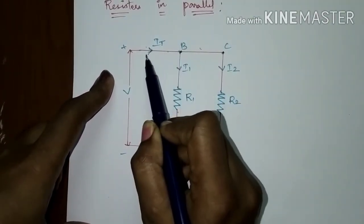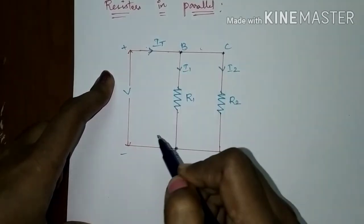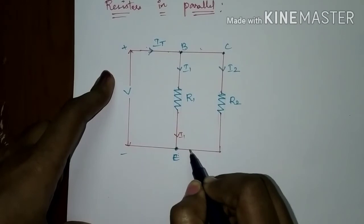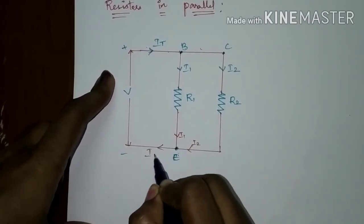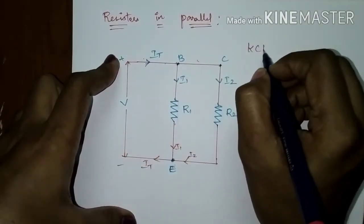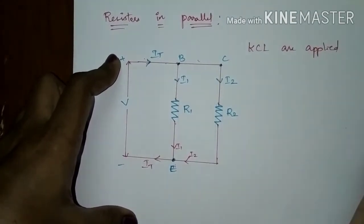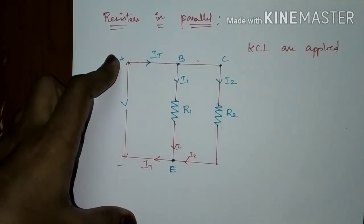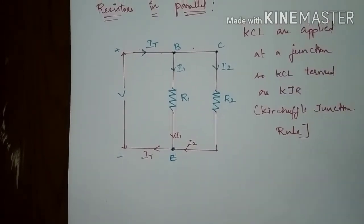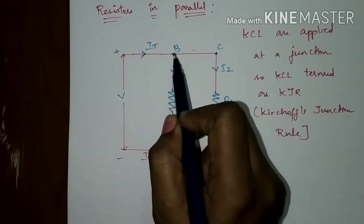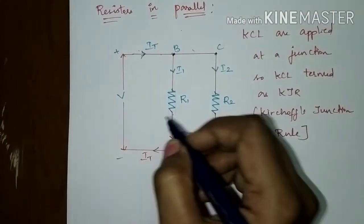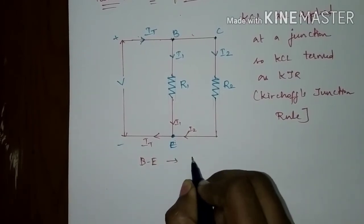Node B is where the current enters and splits into I1 and I2. In the case of node E, it is a leaving node where I1 and I2 are added together. Both B and E are principal nodes. KCL is applied at a junction, so KCL can also be termed as Kirchhoff's junction rule, since it is applied only at a junction or principal node. Nodes B and E are principal nodes, while C is a simple node.